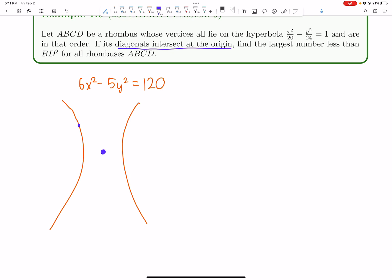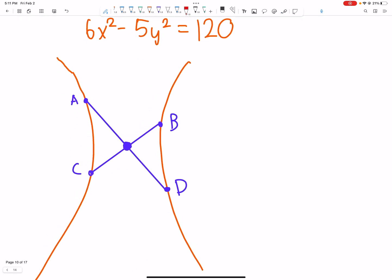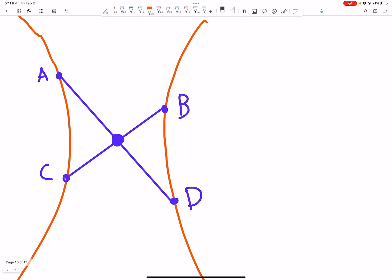Let's look at this rhombus. The origin is this big blue point. A rhombus always has perpendicular diagonals. Let's say point B is at (a,b).